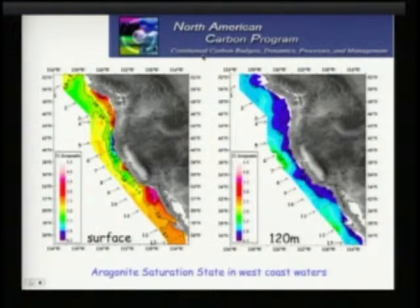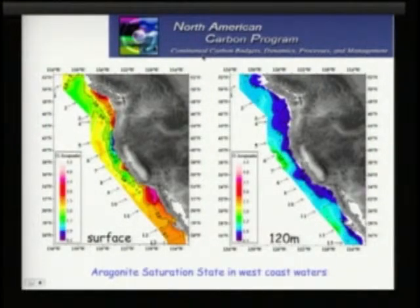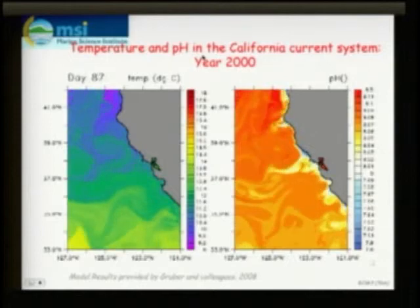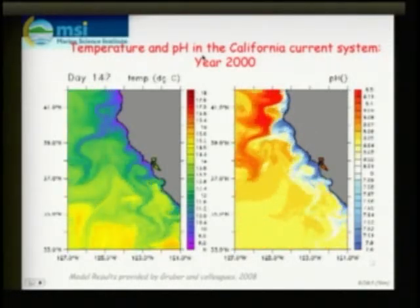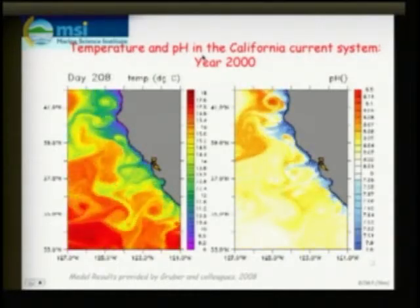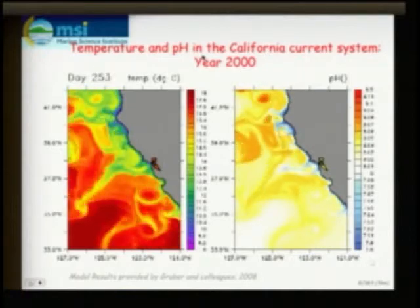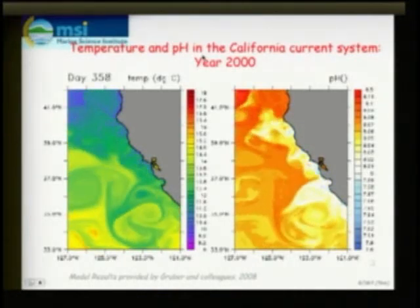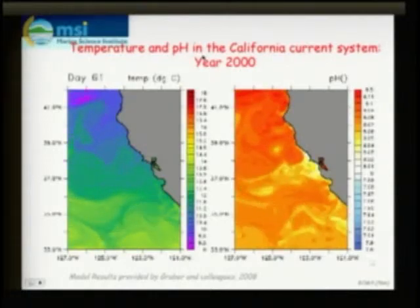We mapped this out at the surface and at 120 meters. At 120 meters, this corrosive water is everywhere we looked from Canada to Mexico — probably extending all the way down to South America. Colleagues Nikki Gruber from UCLA modeled this, and you can see the corrosive low-pH water upwelling during summer months all along our entire coast and advecting out into surface waters to the west. This upwelling occurs from March through November and is a serious problem for our region and its ocean ecosystems.